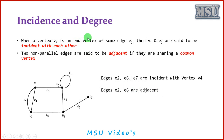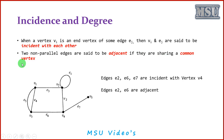Incidence and degree values are two very important terms in graph theory. When vertex Vi is an end vertex of some edge Ej, then Vi and Ej are said to be incident with each other. For example, edge E4 and vertex V1 meet at a point — we say they are incident with each other. Two non-parallel edges are said to be adjacent if they share a common vertex. For example, E4 and E3 share common vertex V1, so E4 and E3 are adjacent to each other.